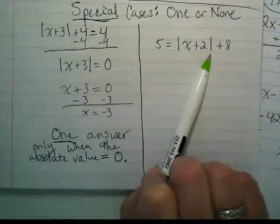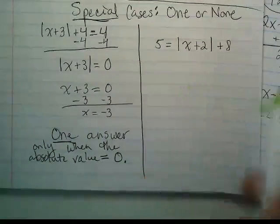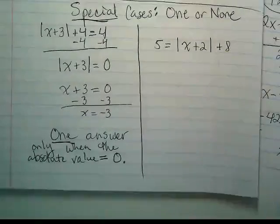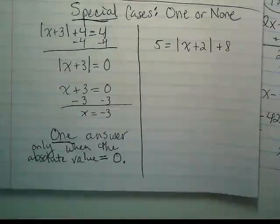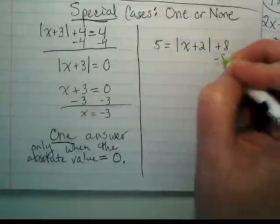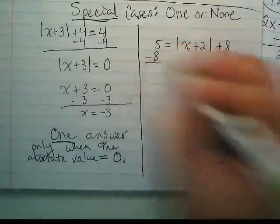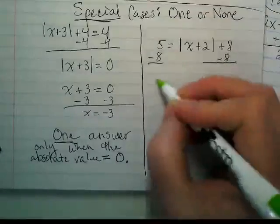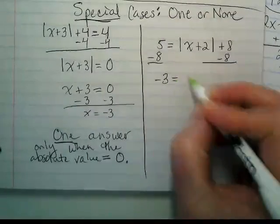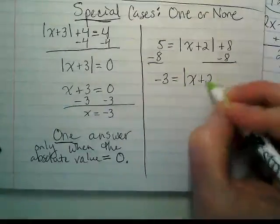This one, they always kind of surprised me because I just started doing the work and I'm like, oh, yeah. What are we going to simplify with here? Minus eight. And what's going to happen on the left side of our equation? It's going to be negative three is equal to the absolute value of x plus two.